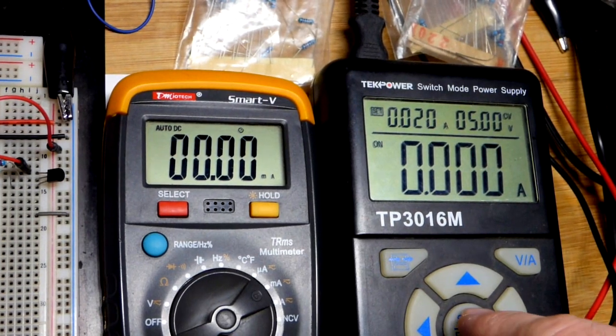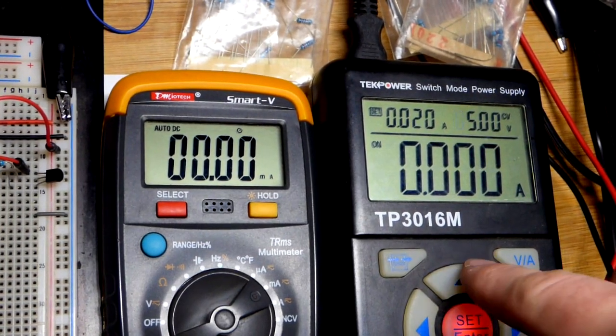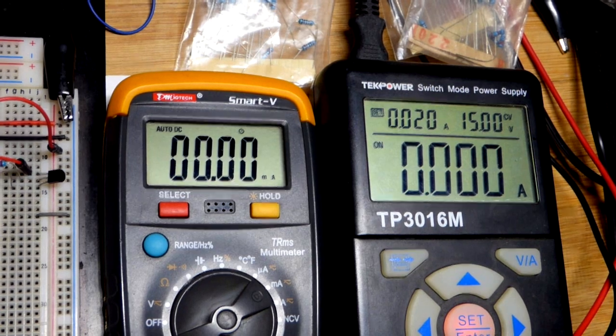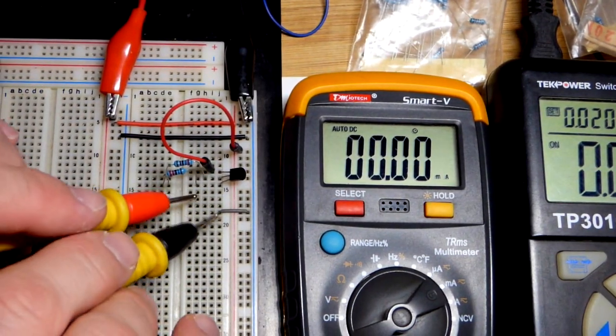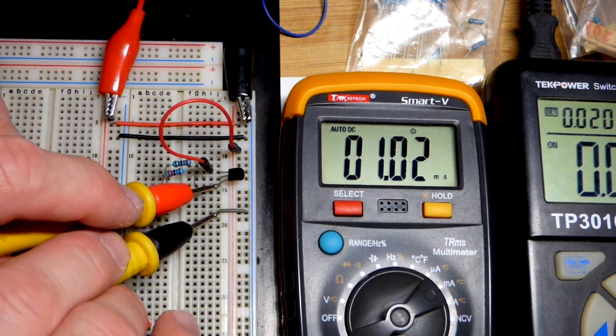Now we're going to bump up the power with the power supply here by going to 15 volts. So we just tripled the voltage, and if we were just using resistance to limit current, we would have three times the current.